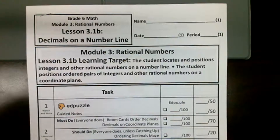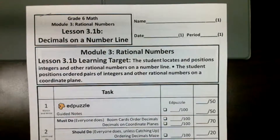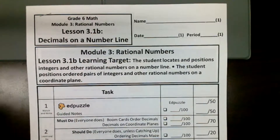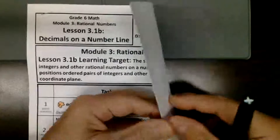You know from Lesson 3.1A that rational numbers are pretty much all the positives, all the negatives, and fractions and decimals. So let's get started with our notes.